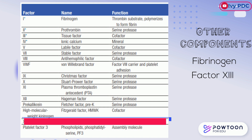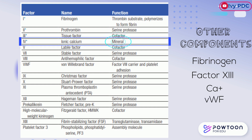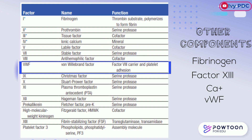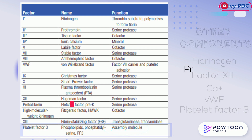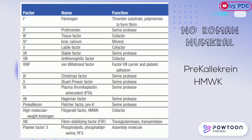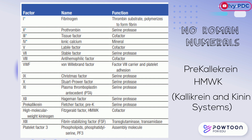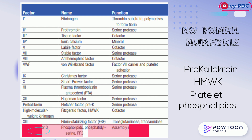Factor 13 is considered a transglutaminase. Calcium is a mineral. Von Willebrand factor serves as a factor VIII carrier and for platelet adhesion. And platelet factor III consists of phospholipids that function as the assembly molecule. Pre-kallikrein, also called Fletcher factor, and high molecular weight kininogen, also called Fitzgerald factor, have never received Roman numerals because they belong to the kallikrein and kinin systems respectively, and their primary functions lie within these systems. Platelet phospholipids, particularly phosphatidylserine, are required for the coagulation process but were given no new Roman numeral — they were once called collectively as platelet factor III.